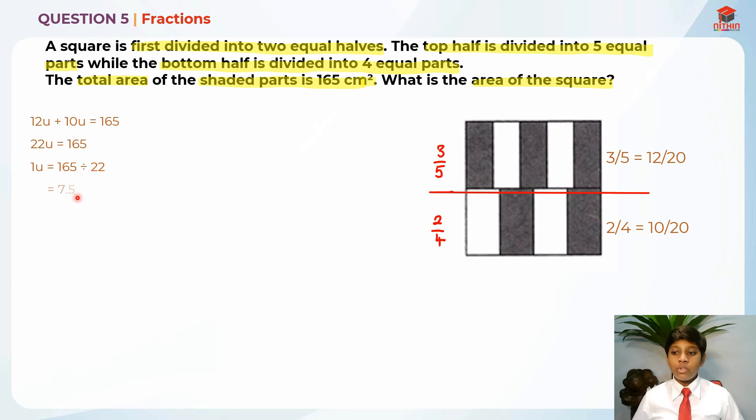And we know that in order to find the total area of the square, we need to take the denominators and add them up together. So 20 units plus 20 units is 40 units.